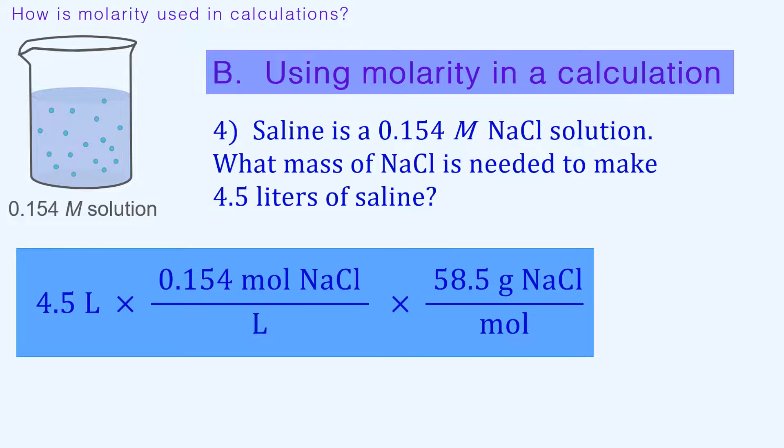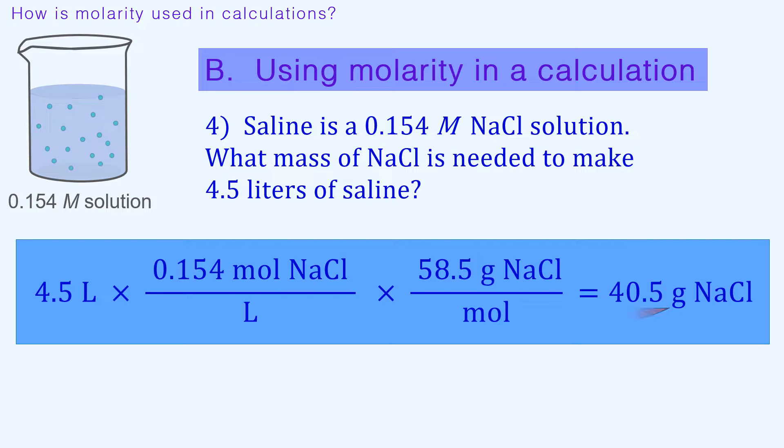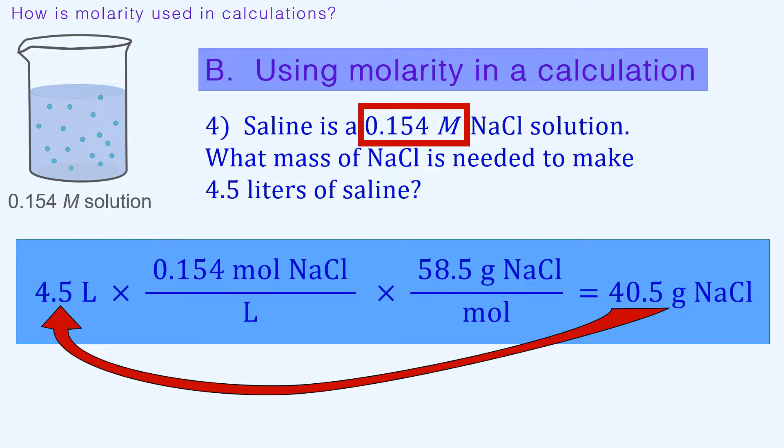so one more step to convert moles to mass using sodium chloride's molar mass of 58.5 grams per mole. The liters cancel, leaving us with moles. The moles cancel, leaving us with grams. Dissolving 40.5 grams of sodium chloride in enough water to make a 4.5 liter solution results in a molarity of 0.154 moles per liter or 0.154 molar sodium chloride.